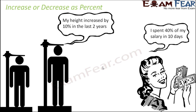So basically what is happening? In the first case, your height is increasing and you are denoting that increase in percentage. In the second case, as you are spending 40% of your salary, what is happening to your bank balance? That is gradually decreasing. The salary you had received, which had made your bank balance, so that bank balance is gradually decreasing.